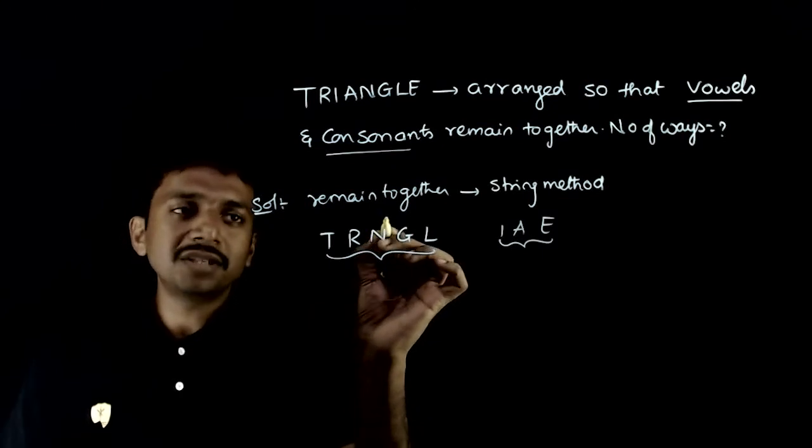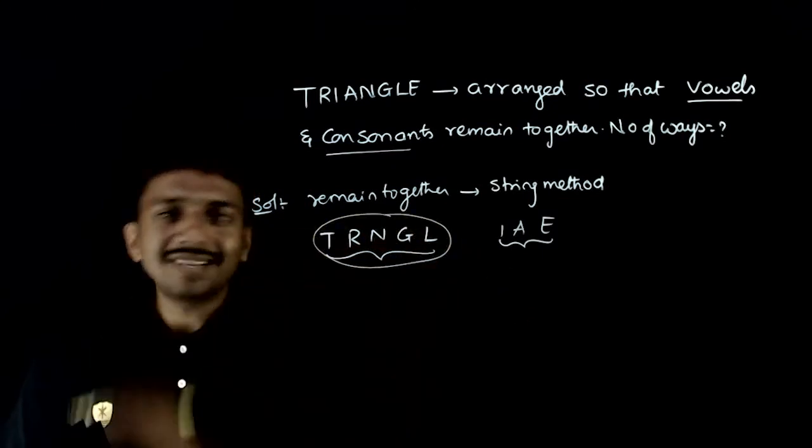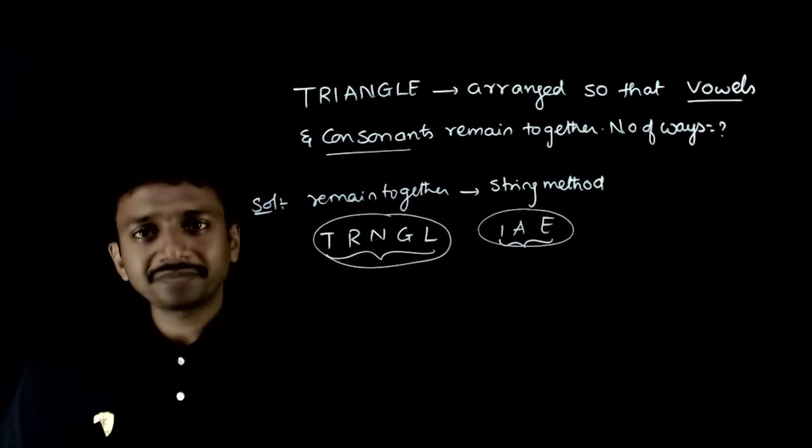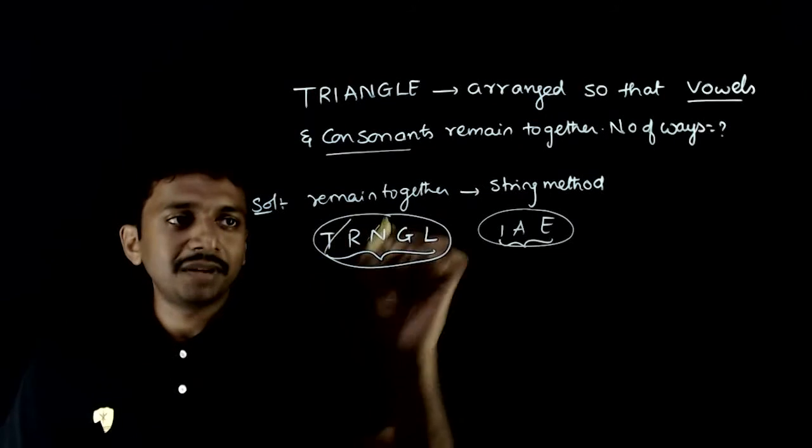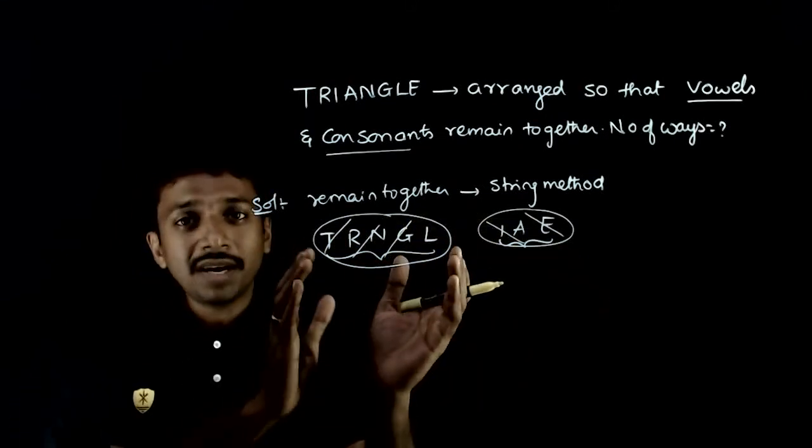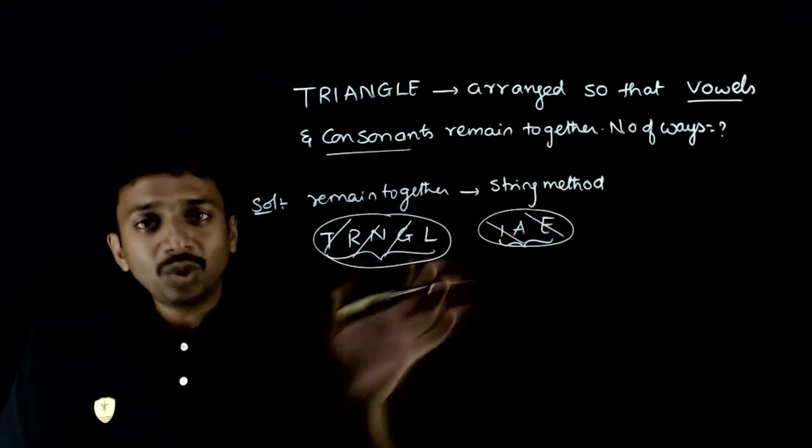Let us tie them together. Let us tie these five consonants together and let us tie these three vowels together. We have tied these together. Now, this is one entity. This is one entity. So now there are two entities.